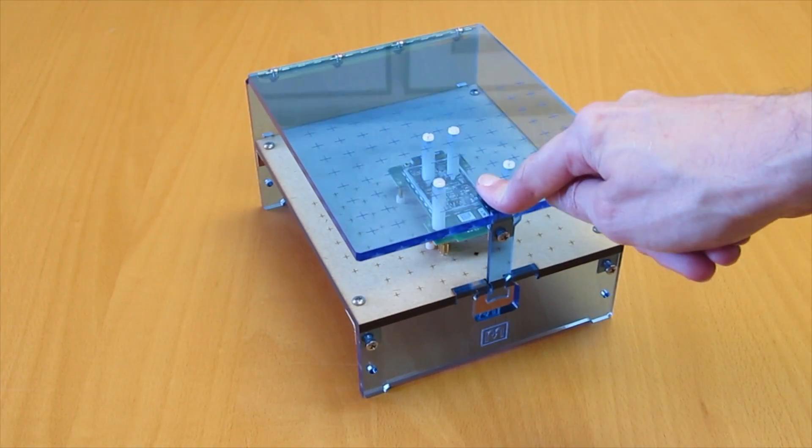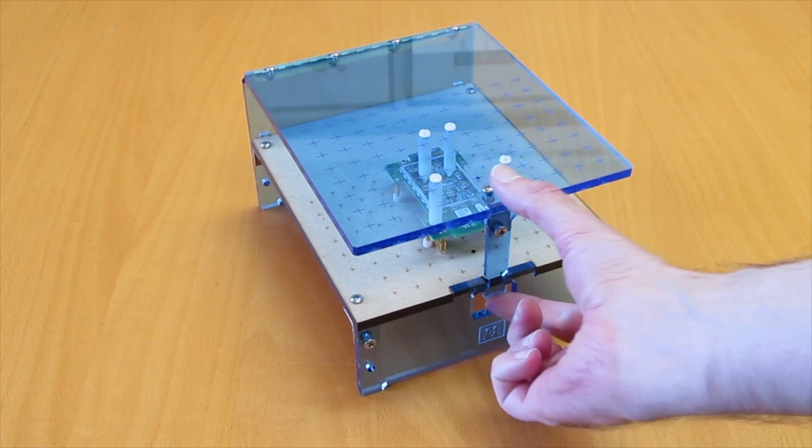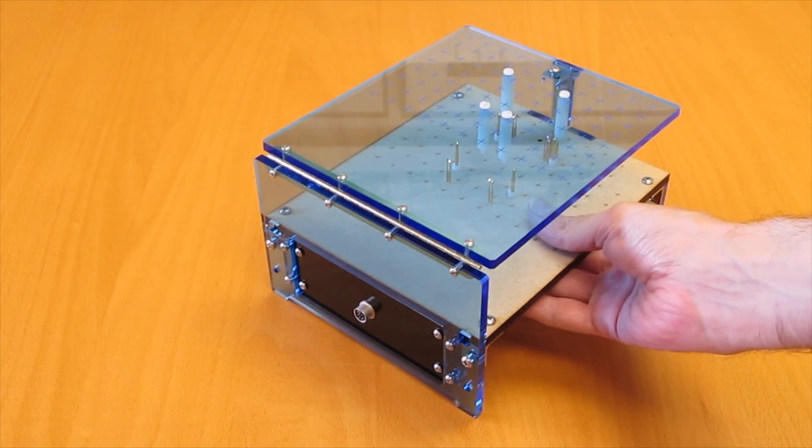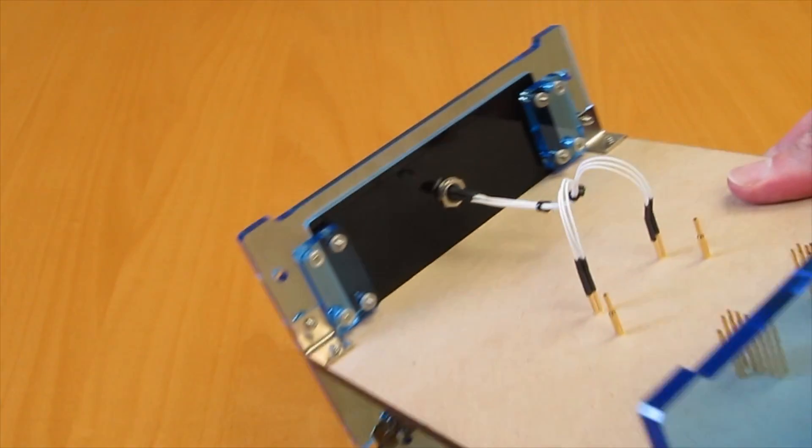At the front of the fixture the clip latches securely. When testing is complete the clip is easily released and the fixture opens. Test probes are typically wired to a connector on the rear panel for connection to external test equipment.